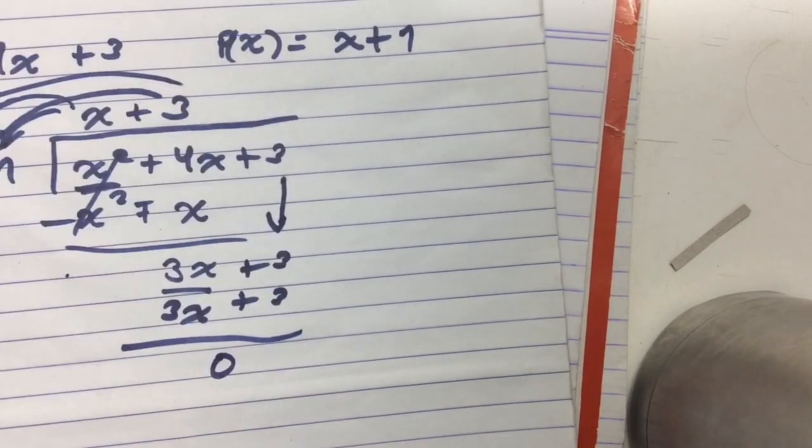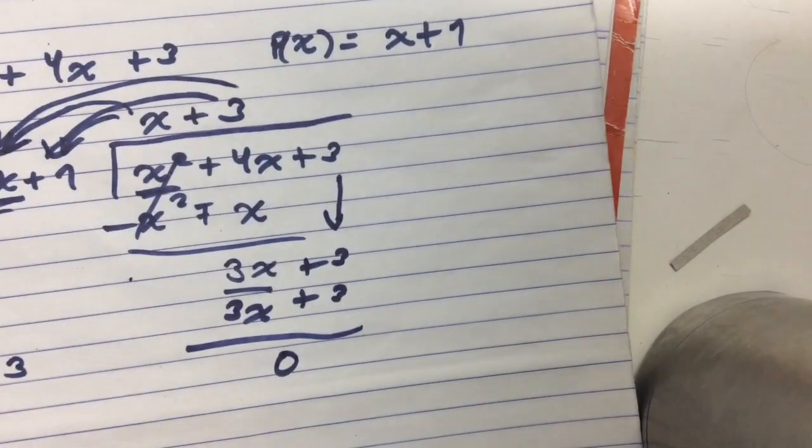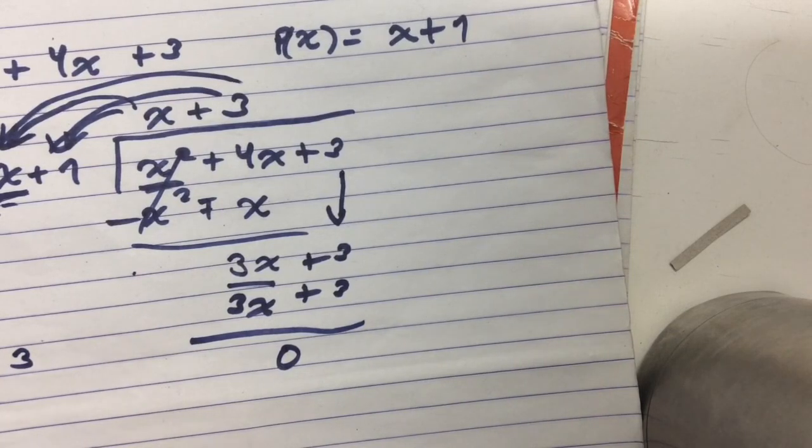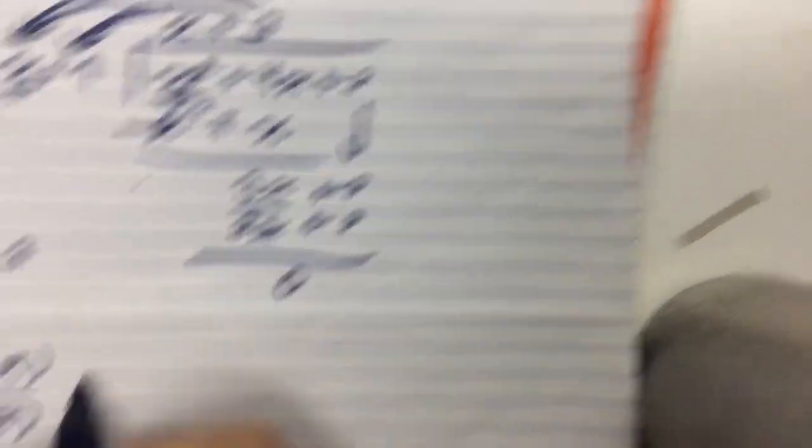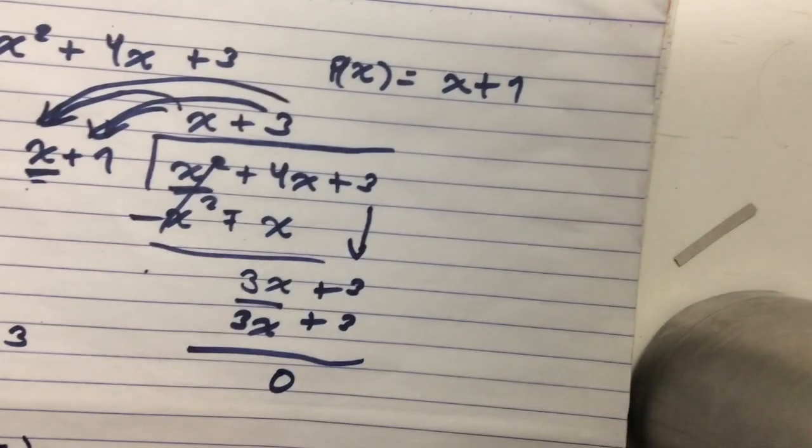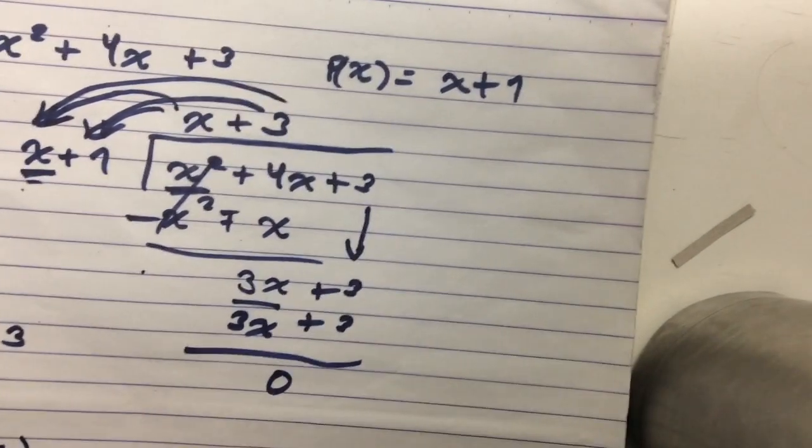So in this case, our quotient for these two polynomials, f(x) over p(x), would be our new function y which would be x plus 3.